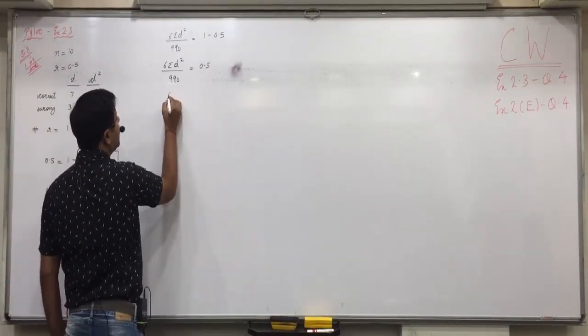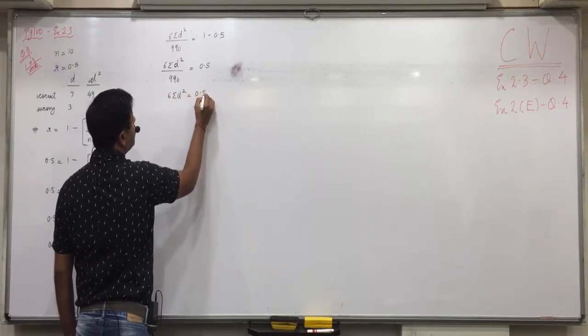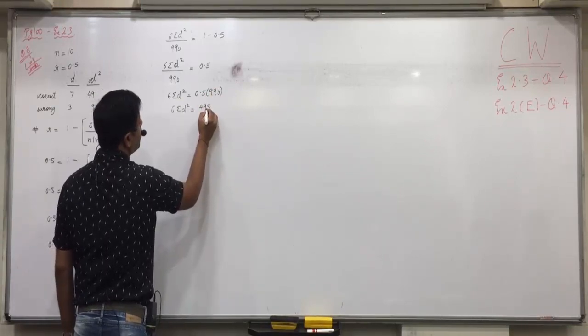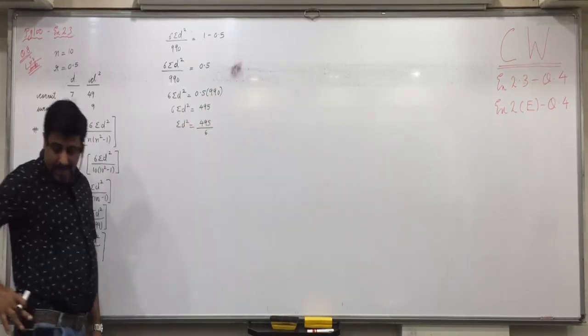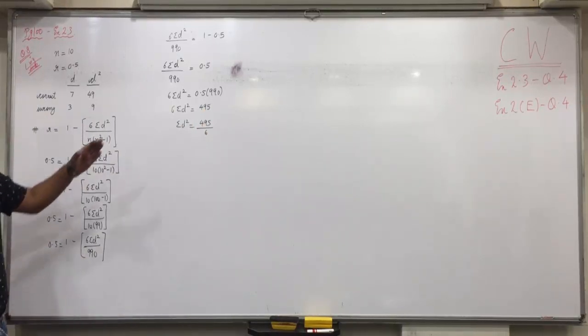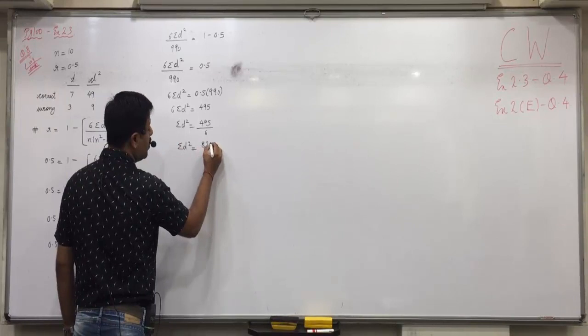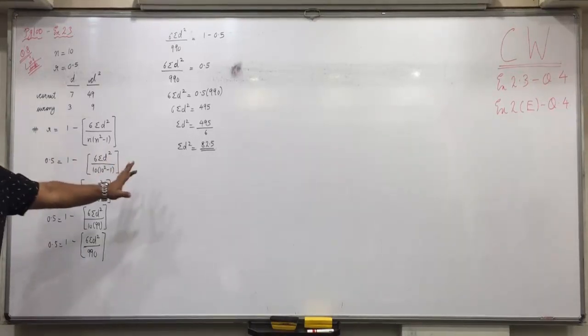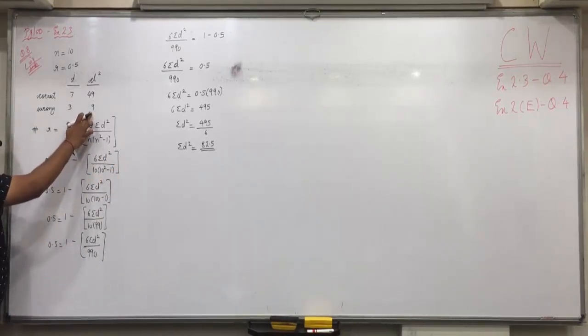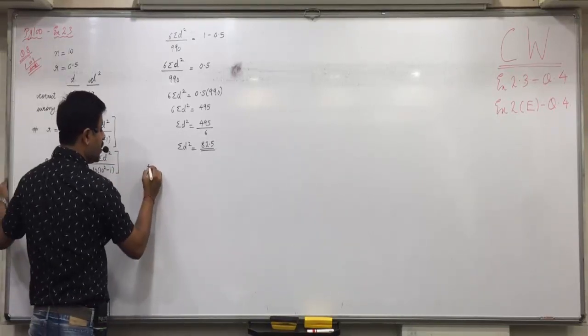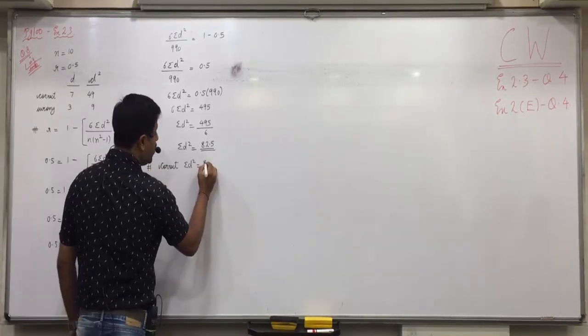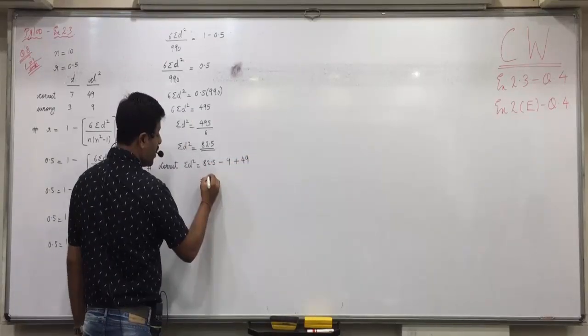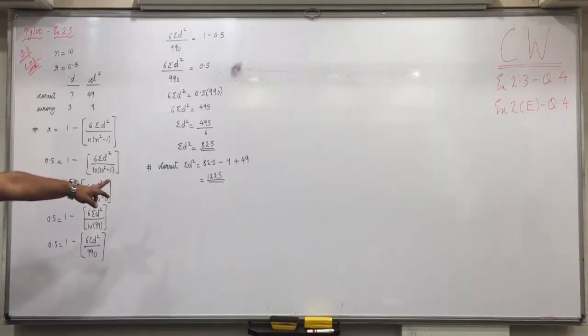Then, the next step. So, what will happen? Yes, 990 on the other side will get multiplied. 6 sigma D square equals to 0.5 into 990, that is 495. And what will happen with 6? It will get divided. 6 on the right side will get divided. So, 495 divided by 6. How much is that? 82.5. Any confusions with this? This is wrong sigma D square. Okay. Now, we have to subtract 9 and add 49. Now, correct sigma D square is equal to 82.5 minus 9 plus 49. So, 122.5. Raise your hand who did not understand the correct value of sigma D square.